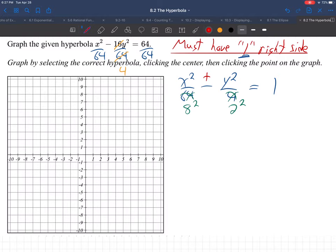0, 0. Because there's nothing next to x. There's no number next to x or y up there. It's not x minus 3 squared or something. That would shift the center. It's just x squared and y squared. So, the center is 0, 0.